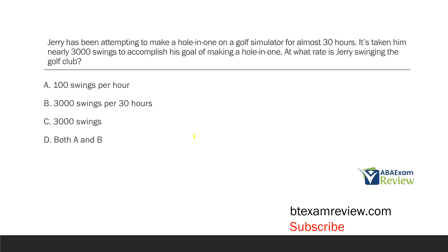Jerry has been attempting to make a hole-in-one on a golf simulator for almost 30 hours. It's taken nearly 3,000 swings to accomplish his goal of making a hole-in-one. At what rate is Jerry swinging the golf club? We have a rate question. For rate, you need frequency and you need time — you find your frequency, put it over your time, and get some sort of ratio. Our frequency is nearly 3,000 swings, and our time is 30 hours. So to find rate, we need to put 3,000 over 30.